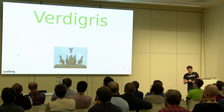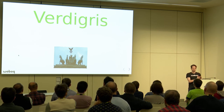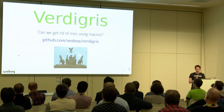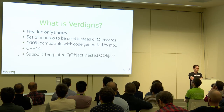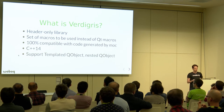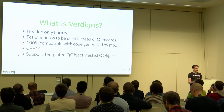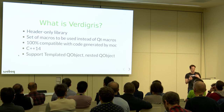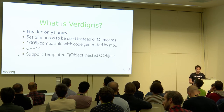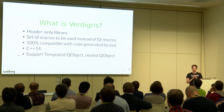So the question is: can we do that without MOC? Can we generate this information without having a tool that processes the code? The answer is yes — using the library called Verdigris. Verdigris is a header-only library that provides a set of macros that can be used instead of the Qt macros. It is 100% compatible with the code generated by MOC, so you can mix and match — using MOC for most of your classes and only Verdigris for the classes that need it.